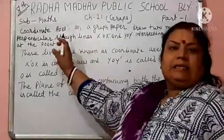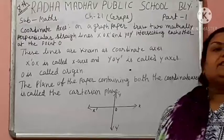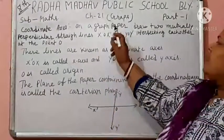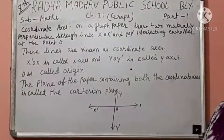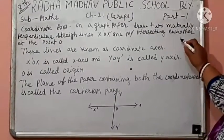Coordinate axis. What is coordinate axis? Coordinate axis means on a graph paper. I think everybody knows what is a graph paper. Graph paper is like this.